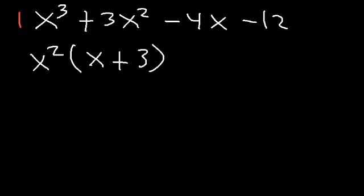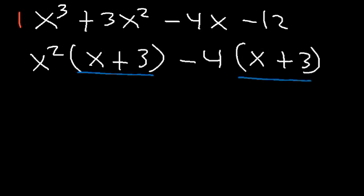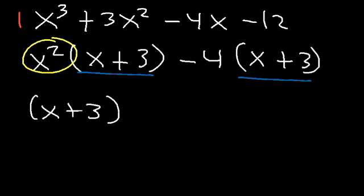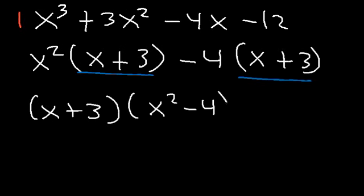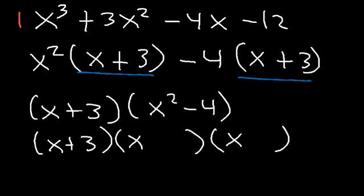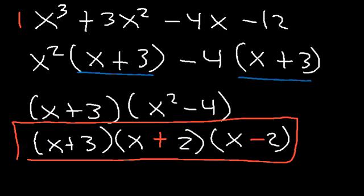For the last two terms, negative 4x minus 12, the GCF is negative 4: negative 4x divided by negative 4 is x, and negative 12 divided by negative 4 is positive 3. Taking out the common factor x plus 3 gives x plus 3 times x squared minus 4. We can factor x squared minus 4 further using the difference of perfect squares: the square root of x squared is x, the square root of 4 is 2, one positive and one negative — giving the final answer x plus 3 times x plus 2 times x minus 2.